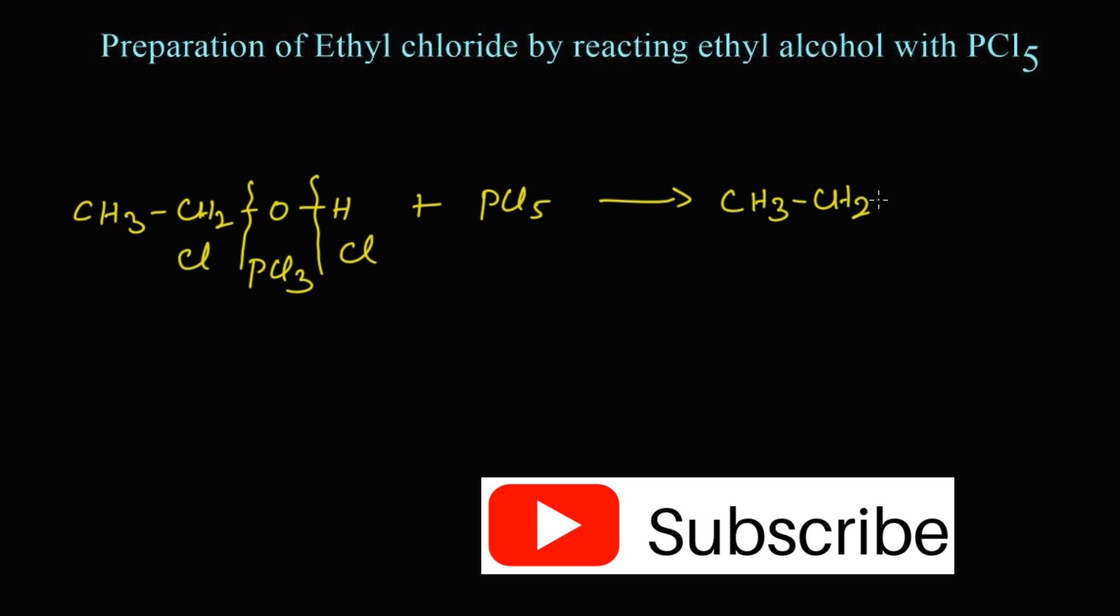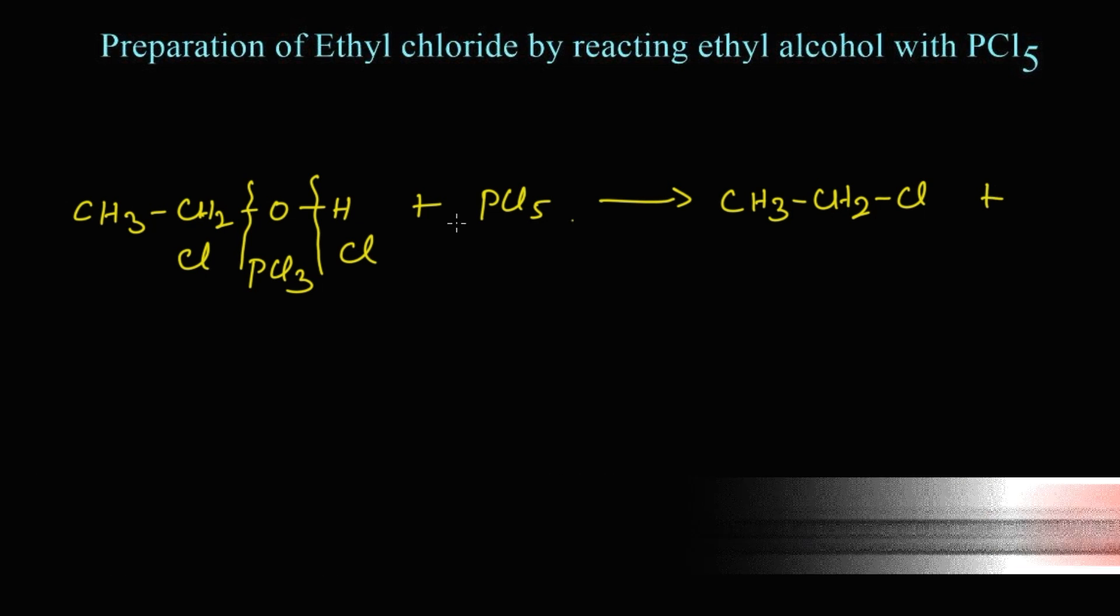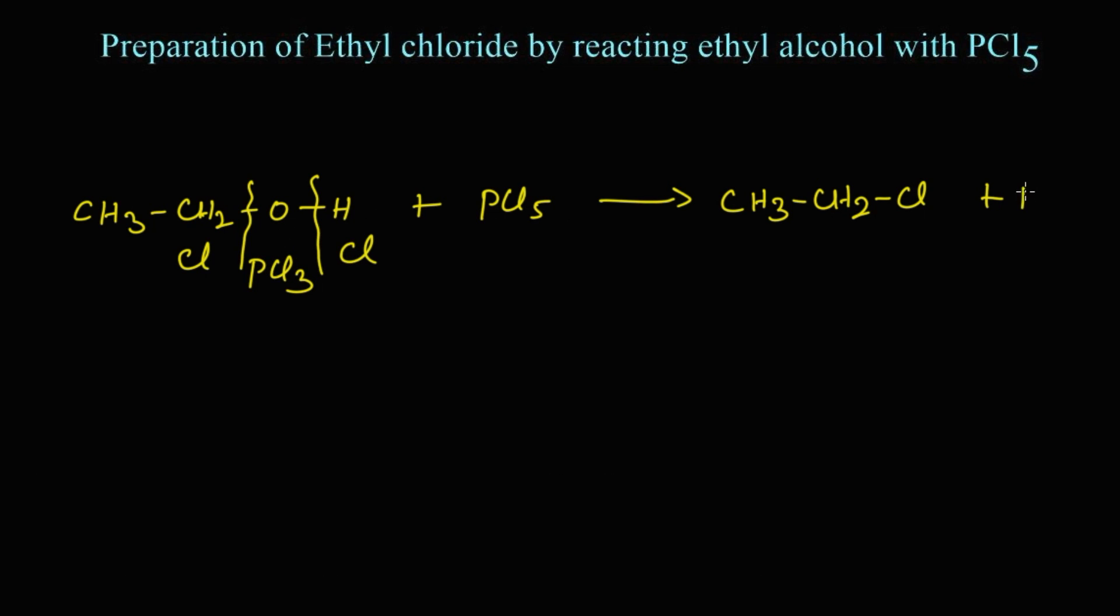And here POCl3, phosphoryl chloride - POCl3. The remaining H and Cl - HCl. Let's write the names for these structures.